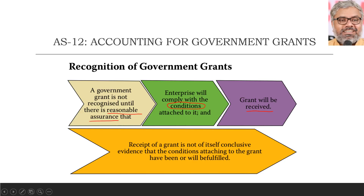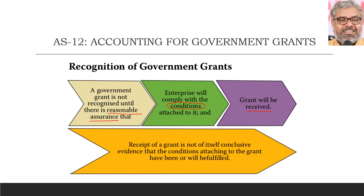If there is reasonable assurance that the grant will be received and conditions will be complied with, then only recognize the government grants. Otherwise, even if received, it may have to be recognized as a liability, not as income or capital. This is more applicable in real life depending upon actual conditions. The recognition criteria for government grants: reasonable assurance that conditions will be complied with and that the grant will be received.